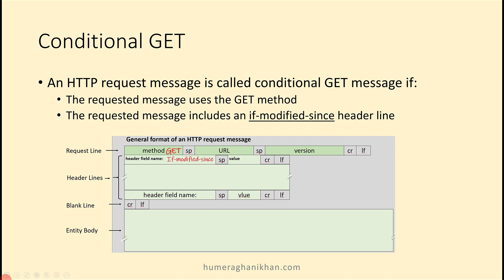Fortunately, HTTP has a mechanism that allows a cache to verify that its objects are up to date. This mechanism is called conditional GET. To use the conditional GET, we need two things. First of all, in the request message, the HTTP request message method shall be GET, and in the header section, the if-modified-since field shall be used.